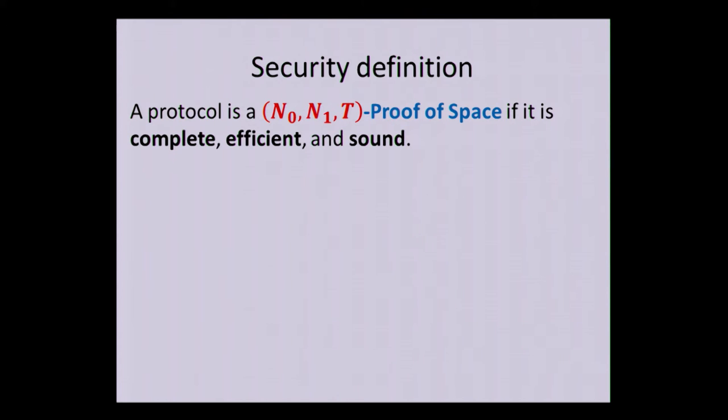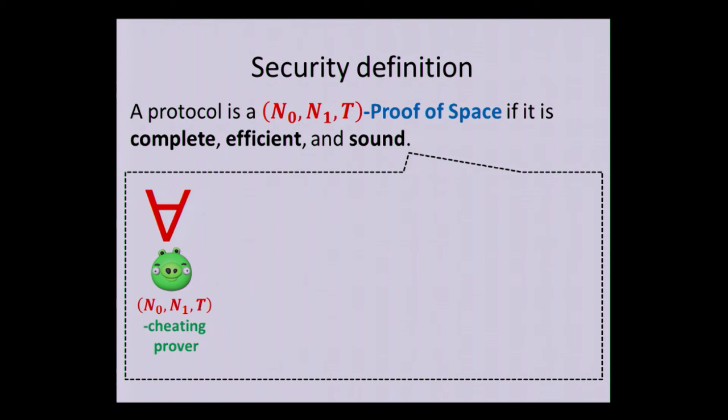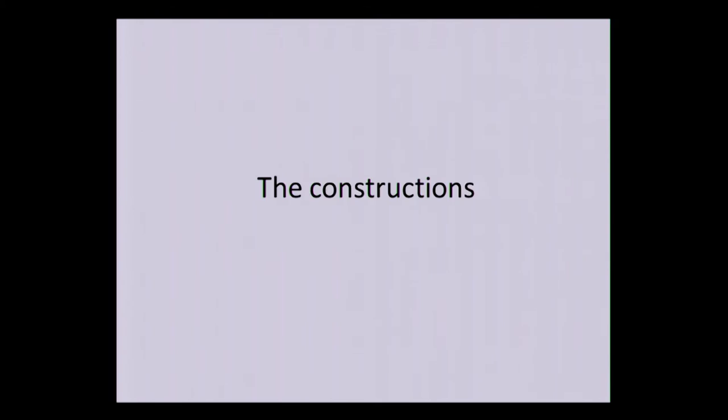So, what is the security definition? Well, it's now quite straightforward. We say that a protocol is N0, N1, T proof of space, if it's complete, efficient, and sound, where completeness and efficiency was already defined, and soundness means what you would expect. So, that for every N0, N1, T cheating prover, the probability that he convinces the verifier is negligible.